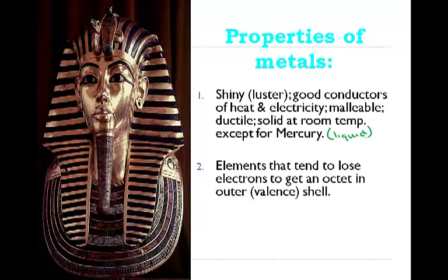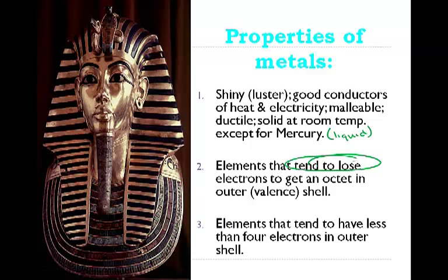Metals are elements that tend to lose electrons to get an octet in the outer or valence shell. We'll talk more about octets later, but here's one of the keys: they're going to want to lose electrons. And these elements tend to have less than four electrons in the outer or valence shell.